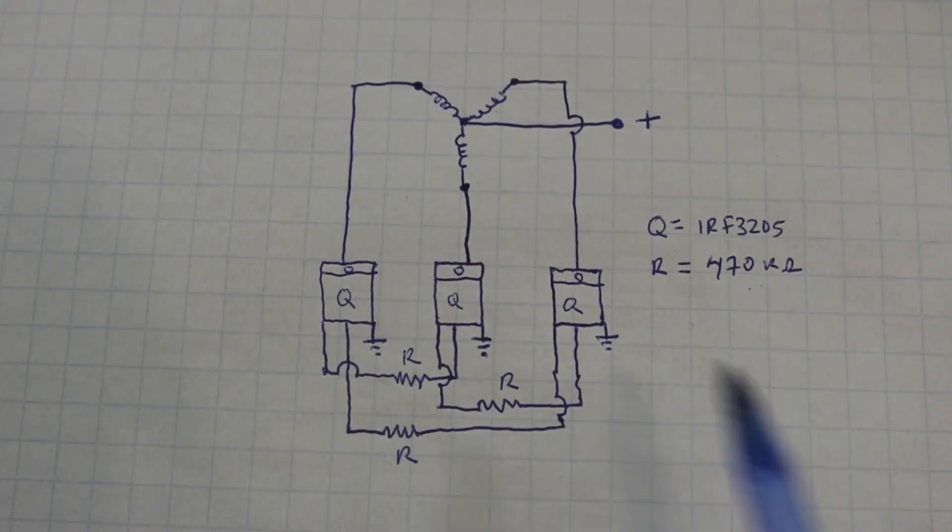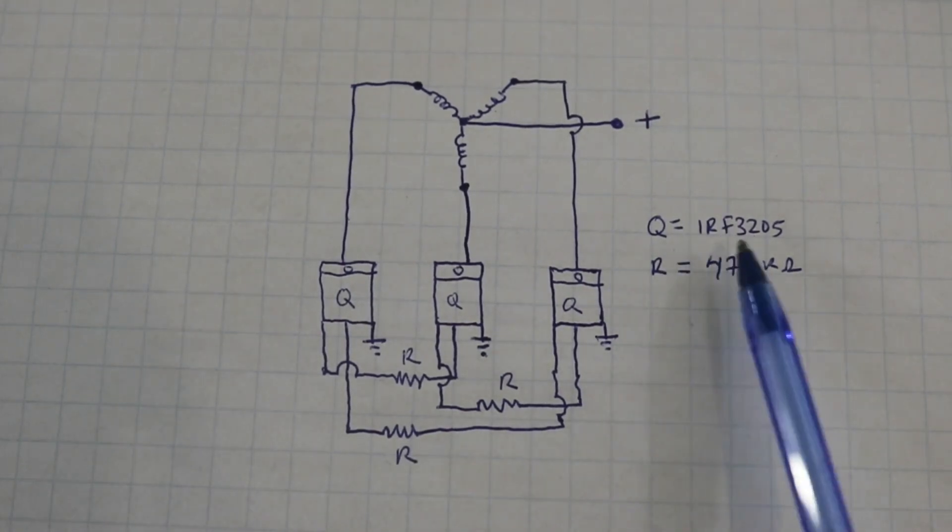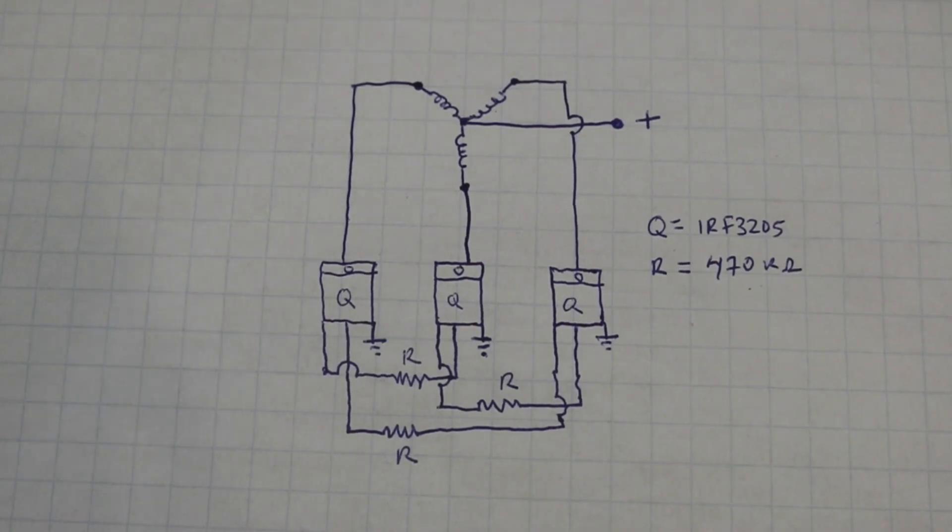The negative is connected to this point in the three transistors, and the resistors go as shown. I am using IRF3205 MOSFETs, but you can use any N-channel power MOSFETs.